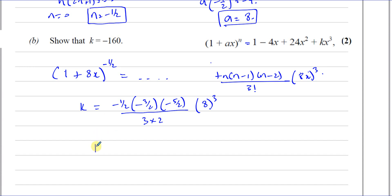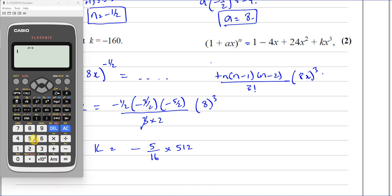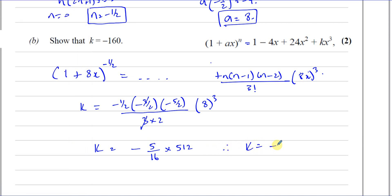Simplifying: the 3 cancels, leaving (−1/2)(−3/2)(−5/2) / (2×2) × 512. The product of the numerators gives −5/16, multiplied by 512 gives 512×5/16 = 160. So k = −160.